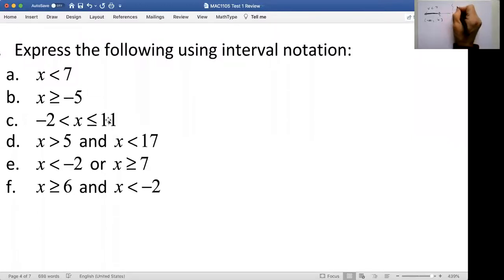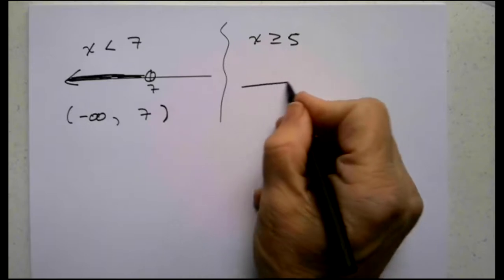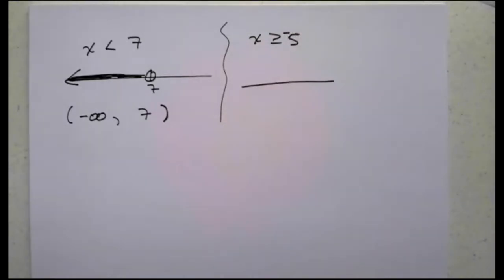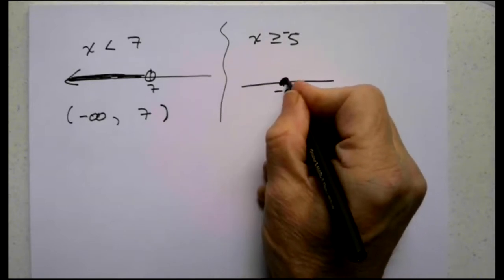Our next question is x is greater than or equal to negative 5. So substantially different. Greater than is going to head to the right rather than heading to the left. Negative 5, I believe is what it was. I'll check to make sure. Yeah. And then we're going to recognize that negative 5 is here. It will be a solid dot and we're going to head to the right.